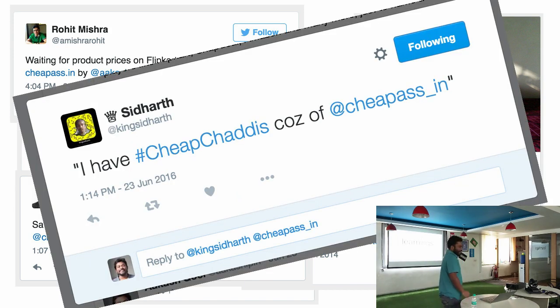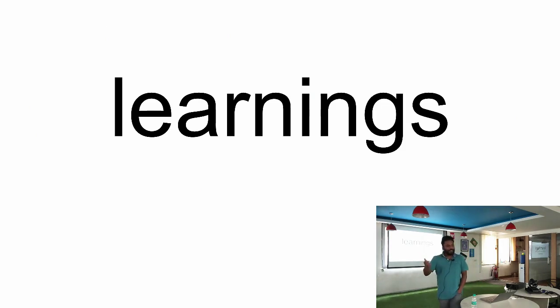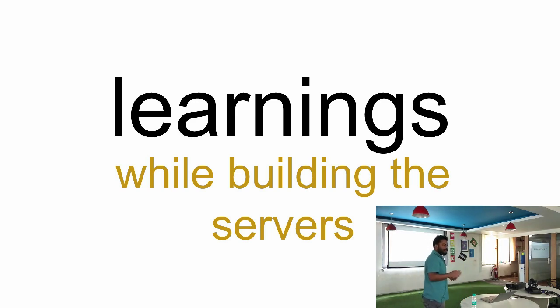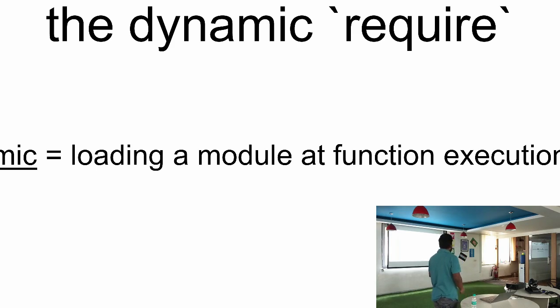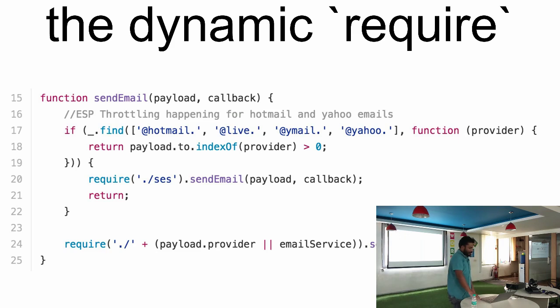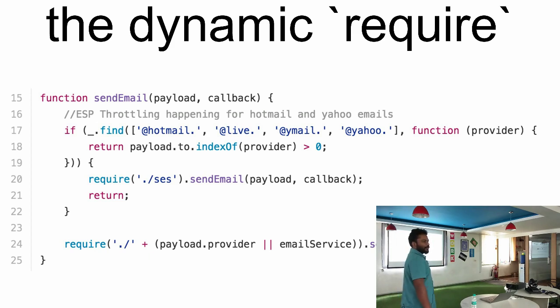Getting to the core technical learnings while building the service: folks who have worked on Node.js will be aware that there are two ways of requiring modules — static require and dynamic require. Dynamic require means loading a module at function execution time, whereas static loading means loading a module at node process startup — requiring it at the top of the file. So how many of you think this code would scale? What would happen if I call this function in a loop? Would something go wrong?